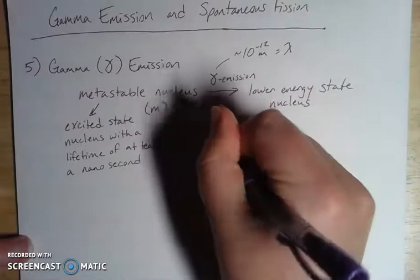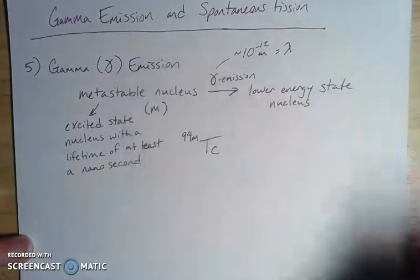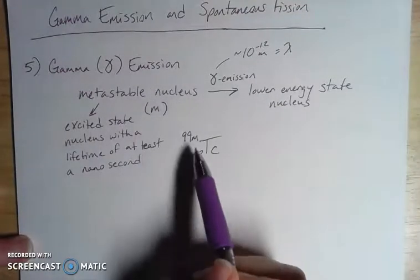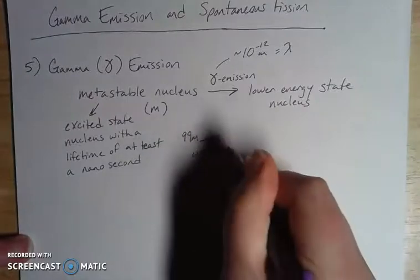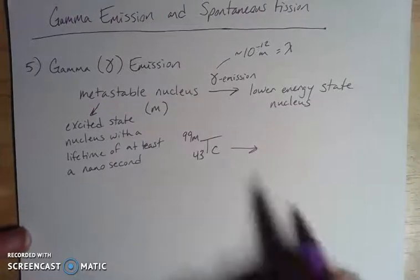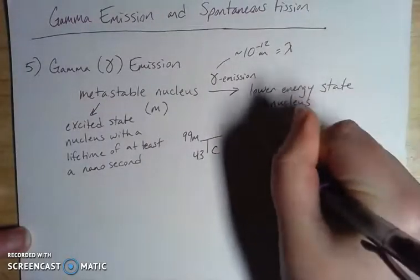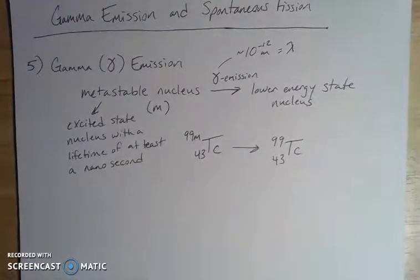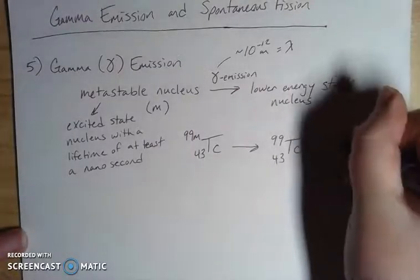So let's look at an example. Let's take technetium. Let's do technetium-99m, which again, m for metastable. And this would be the context that you'd see it in here. The m again associated with the mass number. And then the only difference is it just becomes a non-metastable nucleus, which again, not the most interesting in terms of symbols. But what is released then is our gamma particle, our gamma radiation.